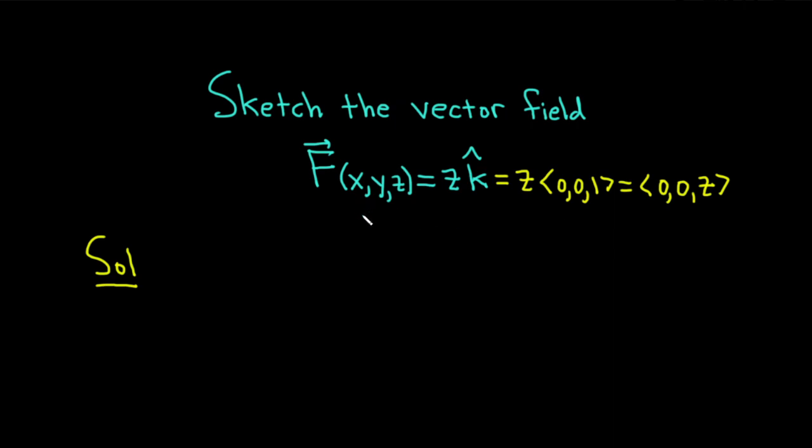So given an ordered triple x, y, z, our vector field sends this to a vector which is 0, 0, z. This notation is often used in mathematics to define functions. So we take the ordered triple and send it to a vector.